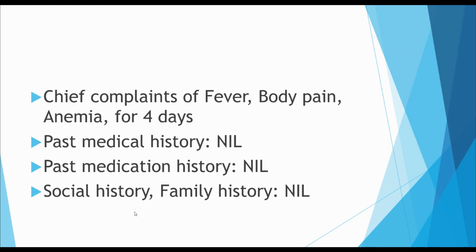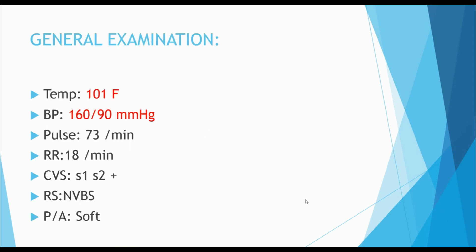Next is Social History and Family History. Social History covers habits like smoking, drinking, etc. — if the patient has any of those, you can add it to social history. Family History covers conditions like hypertension, diabetes, etc. If a parent has a disease, you can include that in the family history.